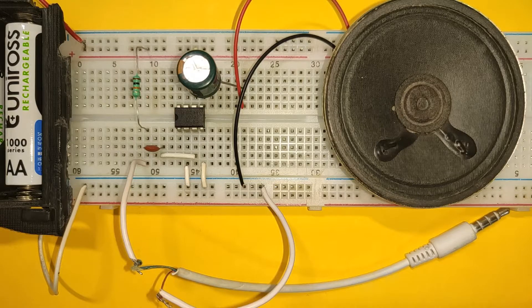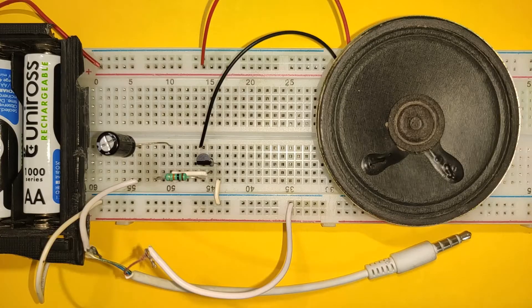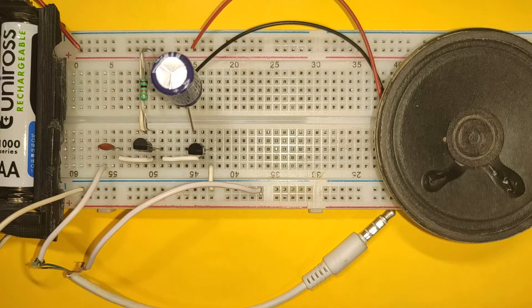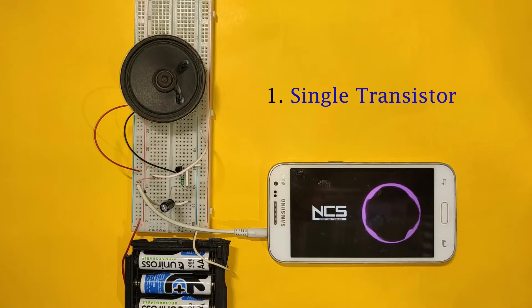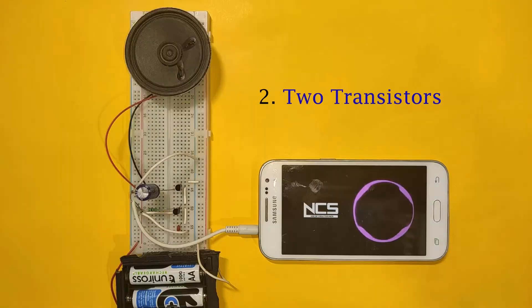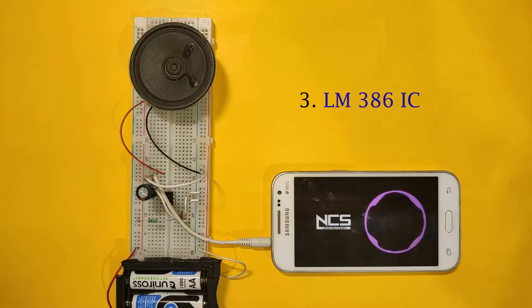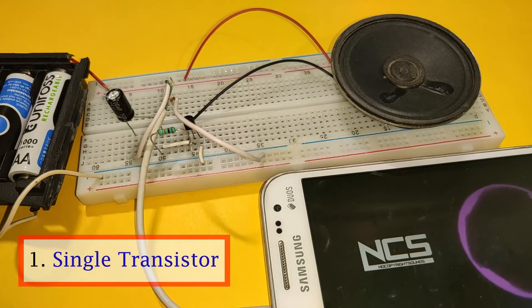Hi everyone! In this video, I am going to show you 3 ways to make an audio amplifier circuit. First, by using a single transistor. Then, using two transistors. And last, by using LM386 IC. So, let's start with the circuit using a single transistor.